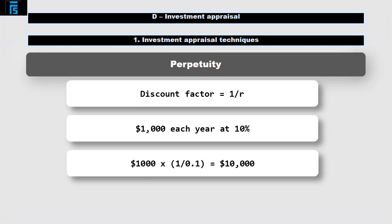This makes sense now we've got the answer in front of us. If we invested $10,000 into a bank account today, in a world with 10% interest rates, we could withdraw $1,000 each year forever. This recreates the perpetuity cash flows.